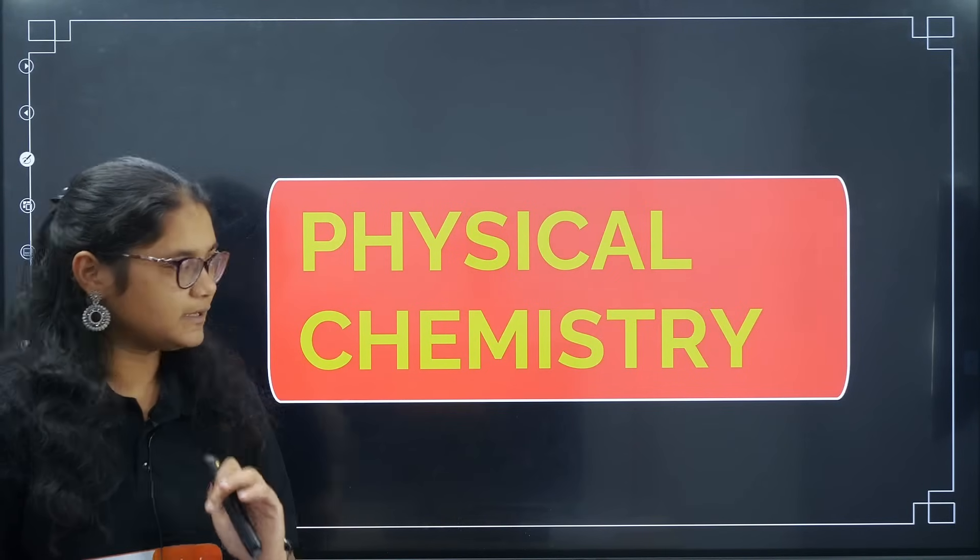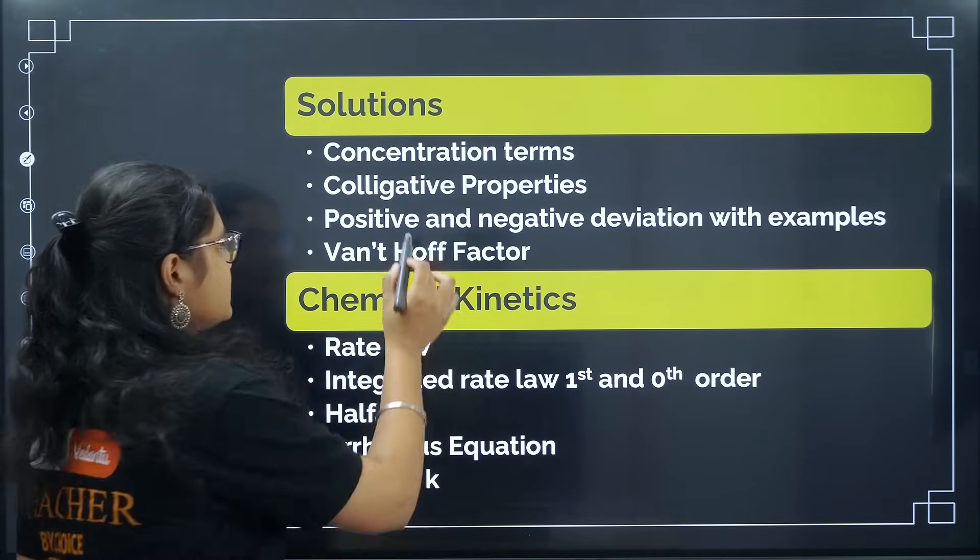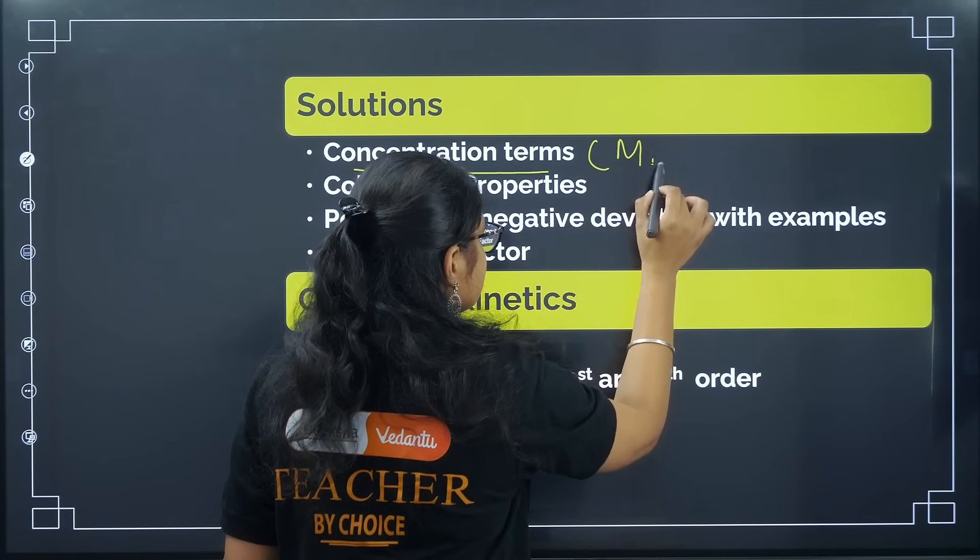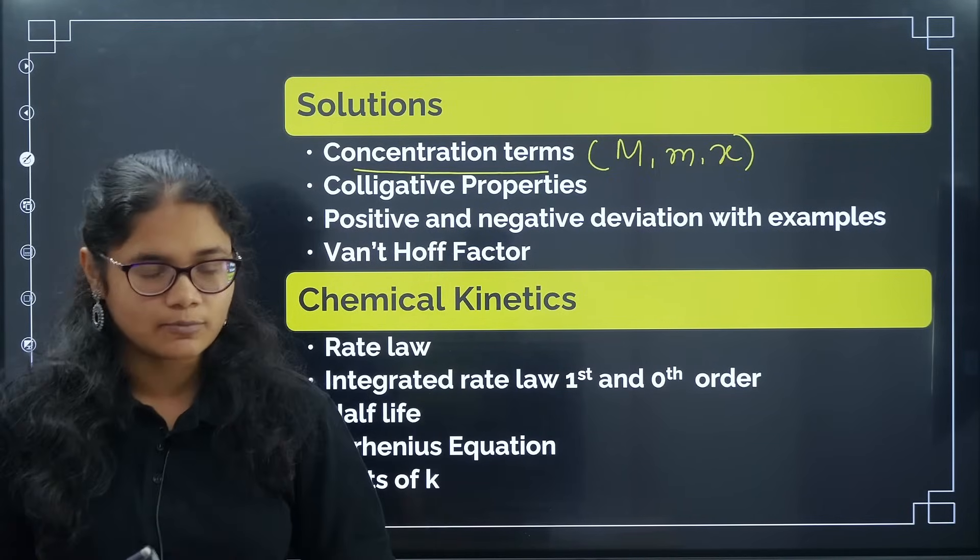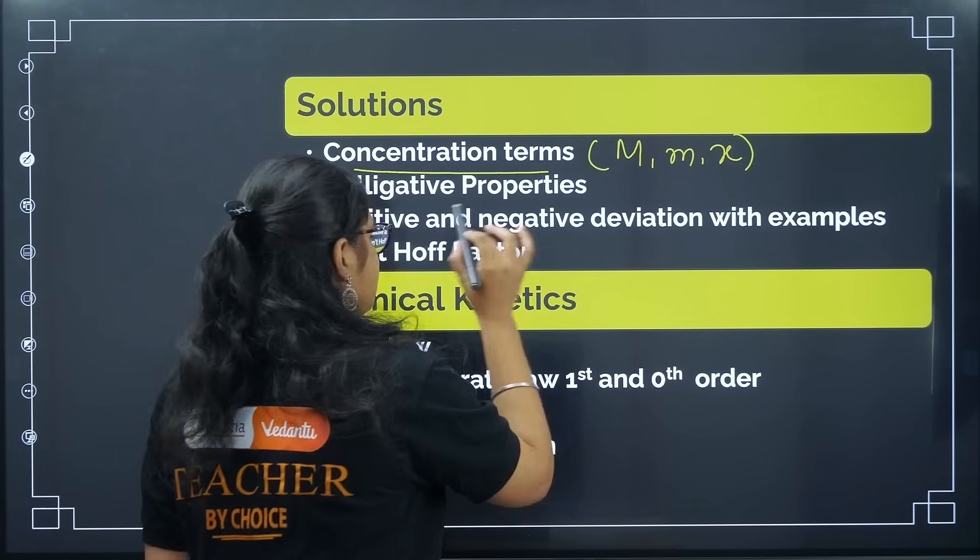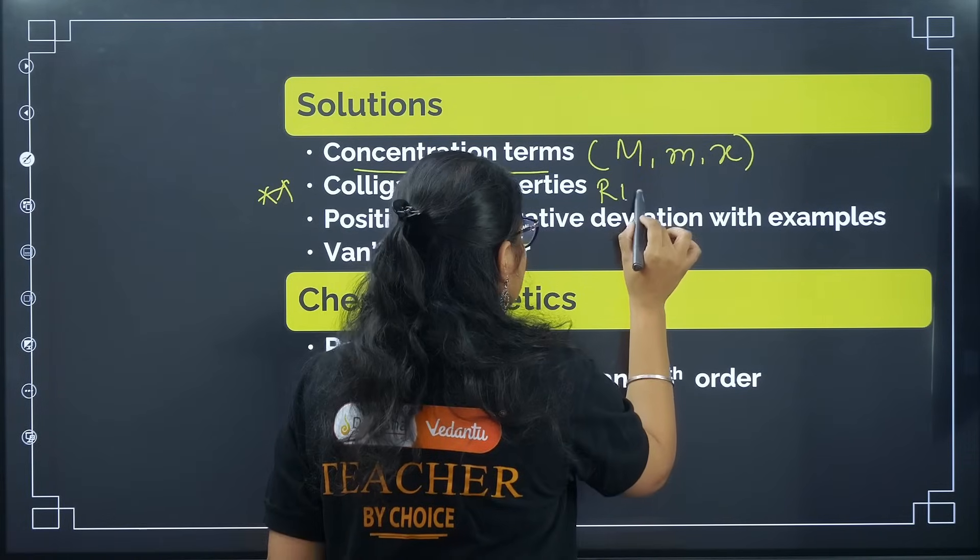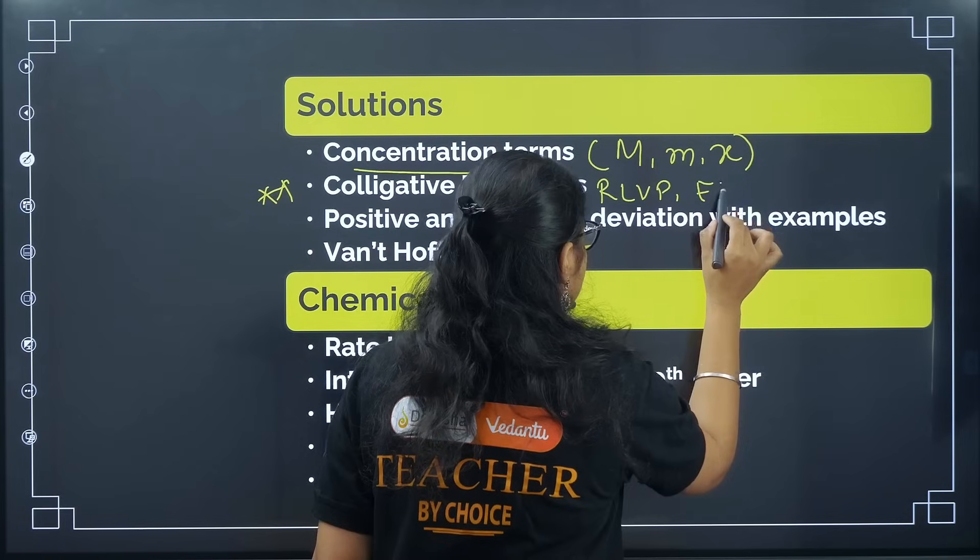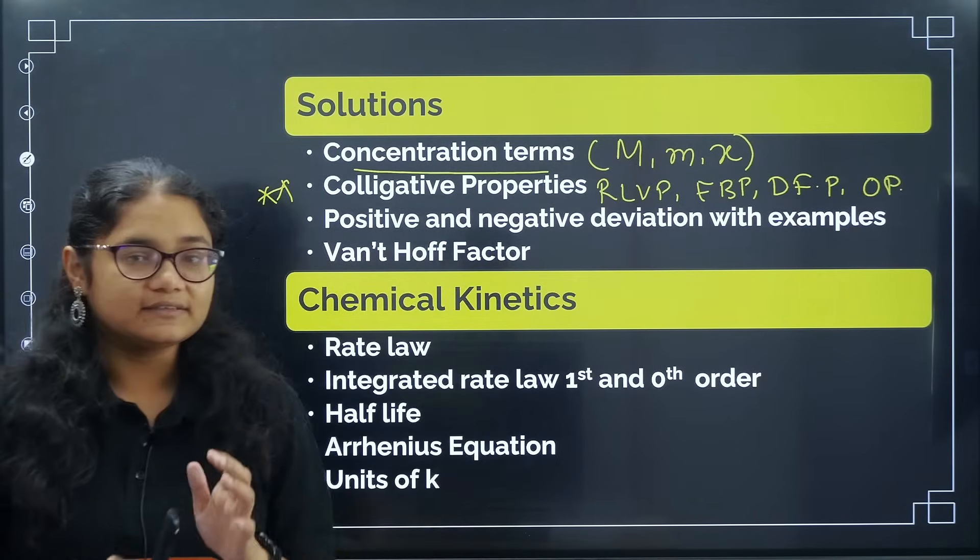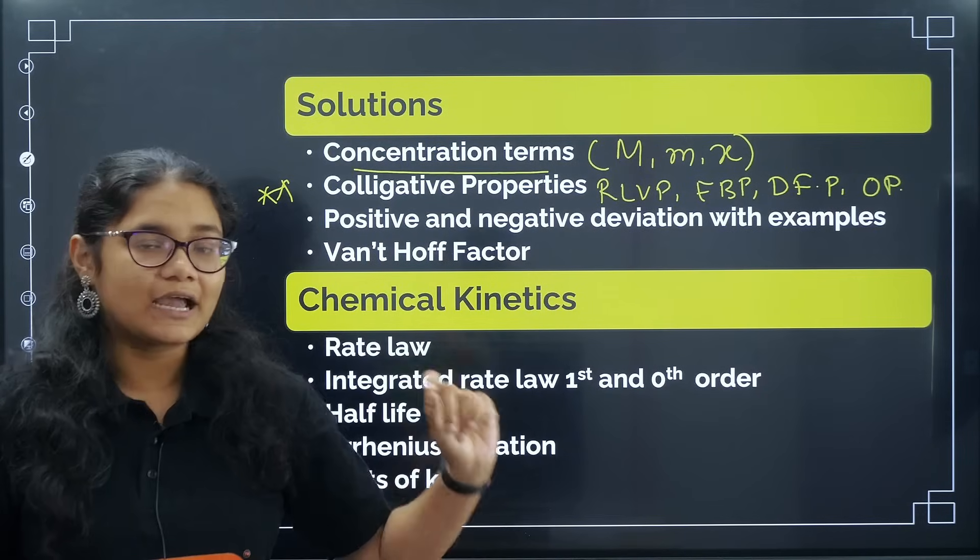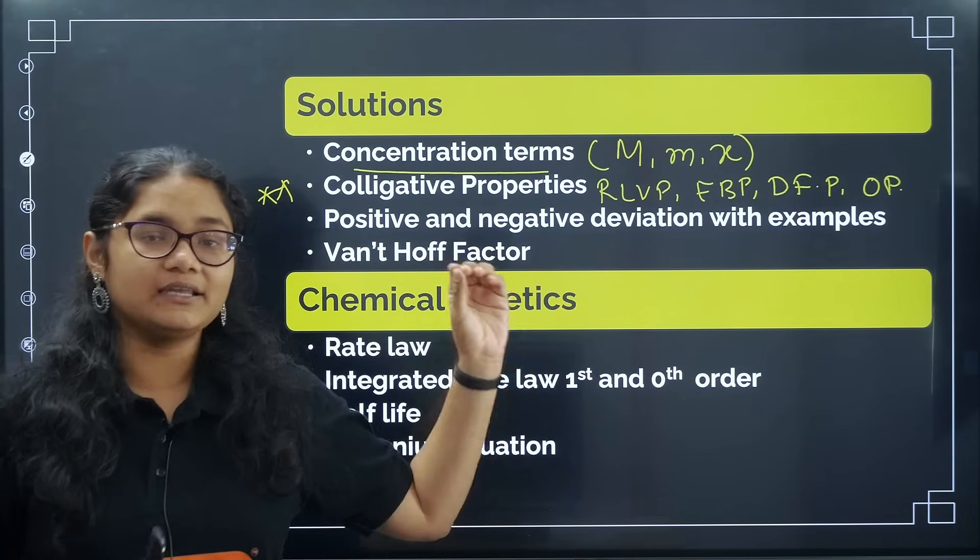Coming to the first topic, physical chemistry in solutions chapter. These are the key points that you must revise. First is concentration terms - revise molarity, molality and mole fraction, because these three terms will be used for all other formulas also. The next very important topic is colligative properties, which includes relative lowering of vapor pressure, elevation in boiling point, depression in freezing point and osmotic pressure. PU-2 chapters are very important and solutions, kinetics and electrochemistry are the most important topics. This is a very scoring topic also.